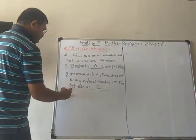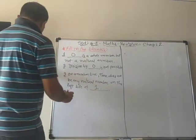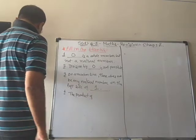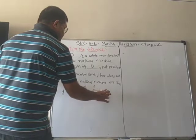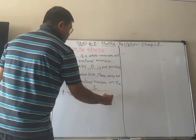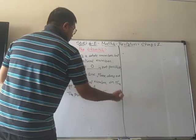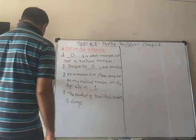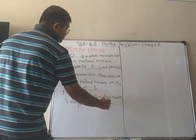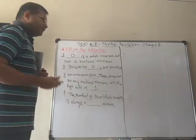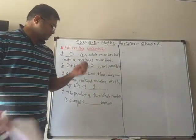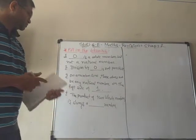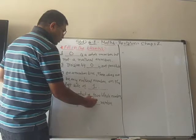Number four: the product of two whole numbers is always a blank number. You know the closure property for multiplication — the product of two whole numbers is always a whole number. So the answer is whole.